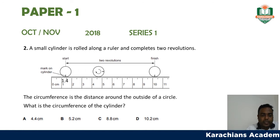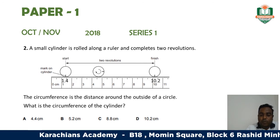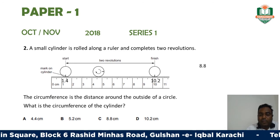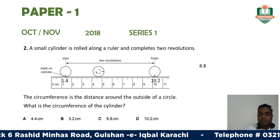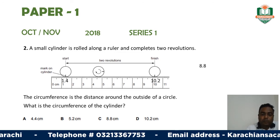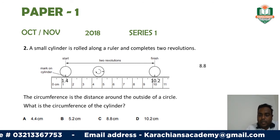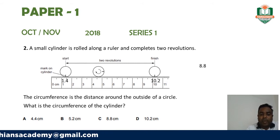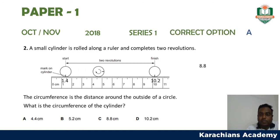The revolution has started from the 1.4 cm mark on the scale and ends at the 10.2 cm mark. When we subtract 1.4 from 10.2 we find the distance traveled was 8.8 cm. Since the cylinder completed two revolutions, we divide 8.8 by 2, giving us 4.4 cm. So the correct option is option A — 4.4 cm.